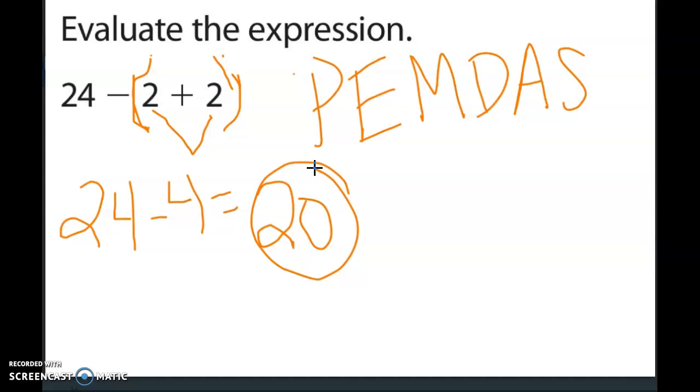If there's no parentheses, then you cross off parentheses and go to your next operation. If there's no exponents, you look at multiplication and division.